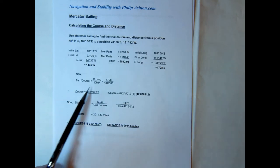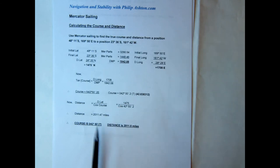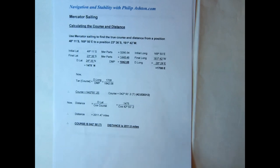We can then work out our course. What's important is that when we work out the distance, we must put our course to at least five decimal places in the formula — at least five decimal places — to give us a more accurate distance. Our answers are 42 degrees 50, distance 2011.5.